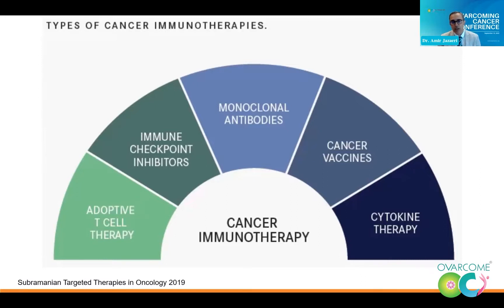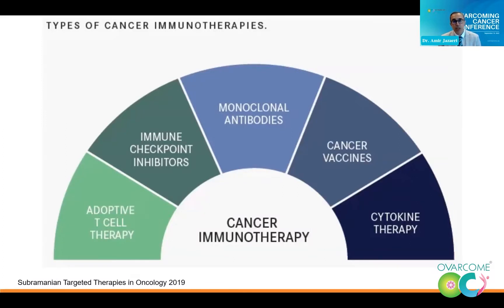I'm not going to talk about all of these today, but adoptive T-cell therapy is when immune cells are harvested from the body, expanded in the lab, potentially genetically modified, and then returned to the patient so they're super immune cells that can better attack and kill cancer cells. Immune checkpoint inhibitors are probably the most commonly used type of immunotherapy today, and most of my talk will be about drugs in this class.